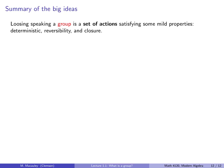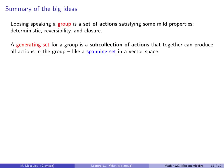Now let's summarize the big ideas of this lecture. Loosely speaking, a group is a set of actions satisfying some mild properties: deterministic, reversibility, and closure. Closure, I mean, if you do a sequence of moves, that is still another move. So, a generating set for a group is a sub-collection of actions that together can produce all actions in the group. You think of it like a spanning set in a vector space.